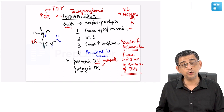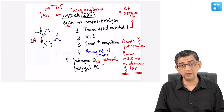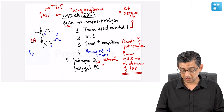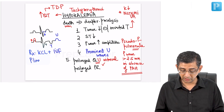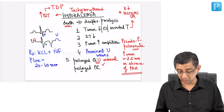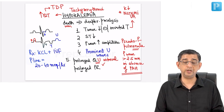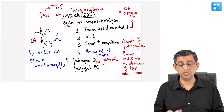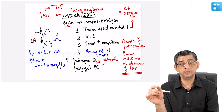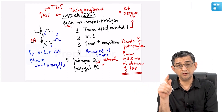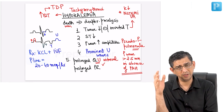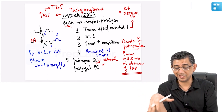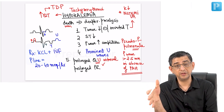Both hypokalemia and hypomagnesemia can contribute to Torsades de Pointes. Treatment of hypokalemia is potassium chloride — never given undiluted, as the heart will stop. It must always be given diluted. The rate at which potassium can be infused via a peripheral line is 20 to 40 milliequivalents per hour; undiluted administration also causes thrombophlebitis. For the formula on how much potassium replacement to give over 24 hours, refer to the electrolytes lecture in the kidney section.